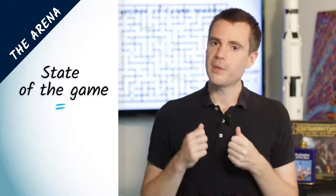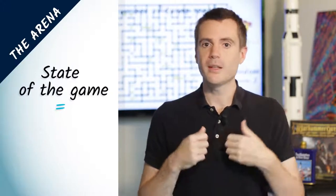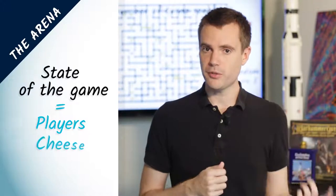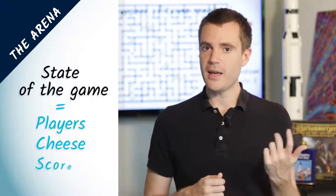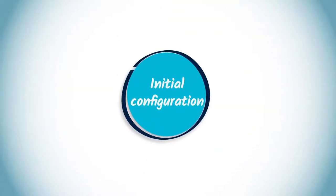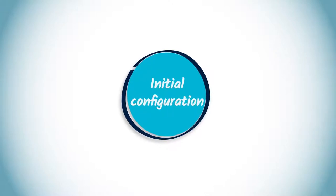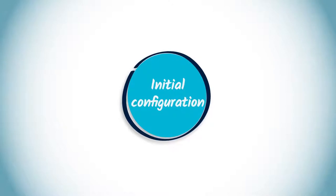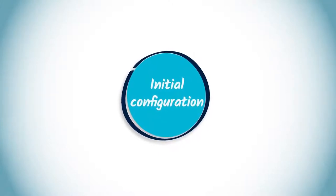To describe a game, we use a very specific graph that we call the arena. The arena is a graph where each vertex summarizes the actual state of the game. By state of the game, we mean the positions of the players, the positions of the remaining pieces of cheese, and the score for each player.